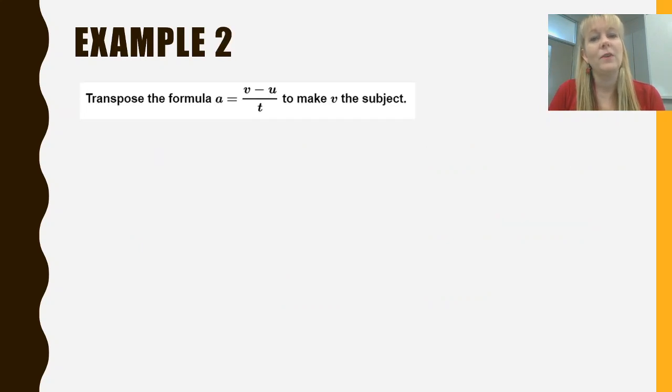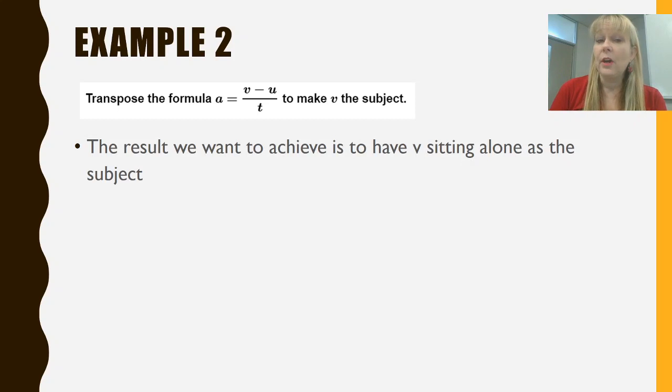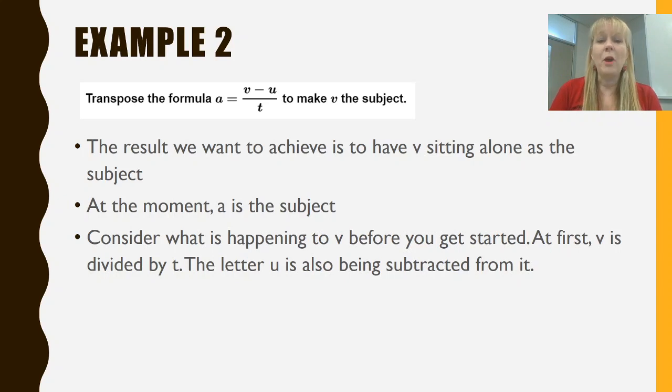Let's try something a little bit more difficult. I've got example 2 here. Now we've got a lot more variables this time. We've got an a, a v, a u and a t and we're asked to make v the subject. So let's have a bit of a think first about what's going on with v. We want v to sit alone. We want a to not be the subject. We want v the subject. And at the moment v is not only divided by t but it's also got a u being subtracted from it. So we know we're going to have to do at least two things to get v by itself.